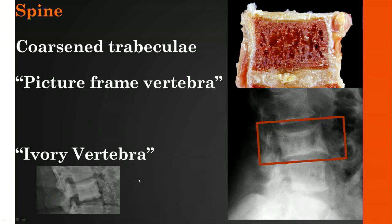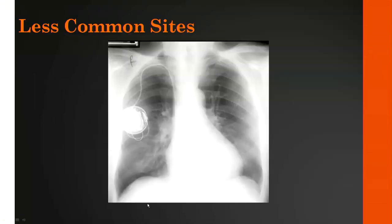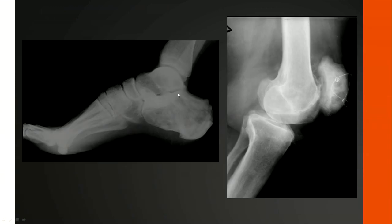Some of the less common sites you might encounter: on a routine chest radiograph you can see mid-diaphysis to end of bone of the clavicle on the left involved by Paget's, with cortical thickening and enlargement relative to the right side. Other less common locations include the calcaneus and the patella, where again the whole bone is involved with coarsened trabeculae, cortical thickening, and expansion.